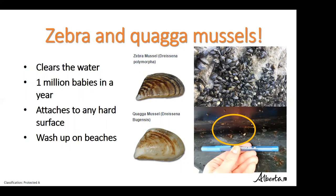Any mussel that attaches to a hard surface is an invasive mussel — native mussels do not attach to things. They can live up to 30 days out of water, making removal very difficult. When present in large numbers, they clog water pipes at a cost of up to 75 million dollars per year. Since they attach to any hard surface, gear or boats left in the water can accumulate mussels, breaking down equipment. Their shells also end up on beaches, potentially injuring people's and pets' feet.